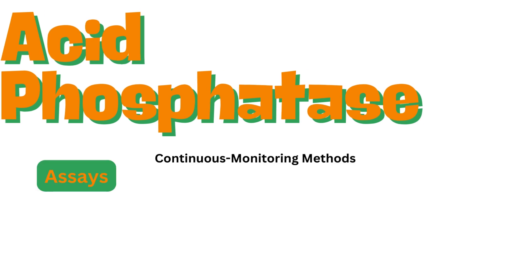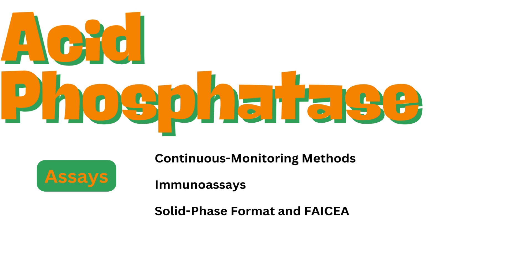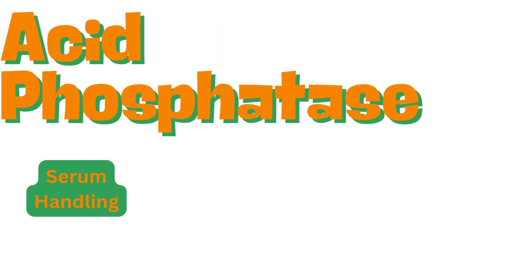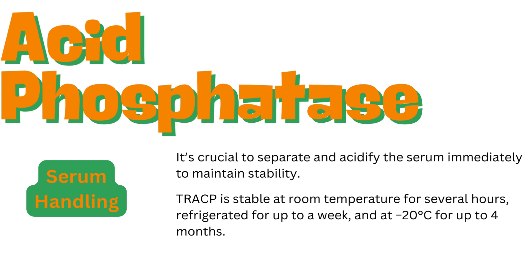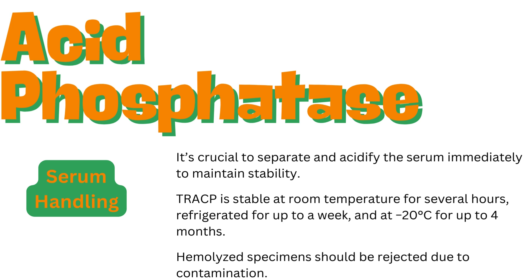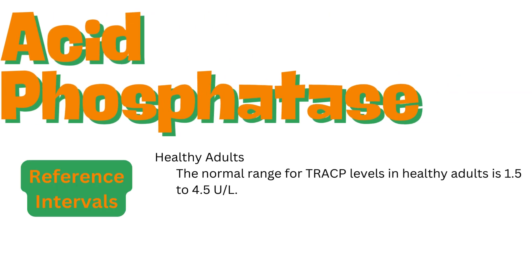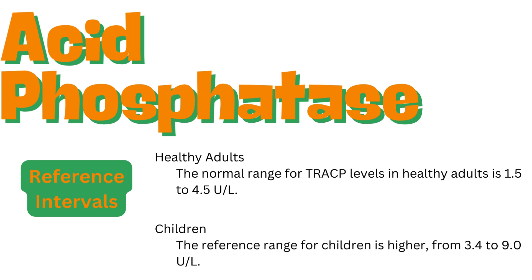Assays: continuous monitoring methods rely on the formation of a colored product from alpha-naphthol. Immunoassays are designed to preferentially detect the 5B isoform of TRACP. Solid phase format and ELISA are used for specific detection of TRACP. Serum handling: it is crucial to separate and acidify the serum immediately to maintain stability. TRACP is stable at room temperature for several hours, refrigerated for up to a week, and at minus 20 degrees Celsius for up to 4 months. Hemolyzed specimens should be rejected due to contamination. Reference intervals: healthy adults, 1.5 to 4.5 units per liter; children, 3.4 to 9.0 units per liter.